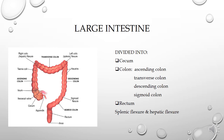I have also mentioned two flexures: splenic flexure and hepatic flexure. The splenic flexure is that bending or curvature between the descending colon and transverse colon. The hepatic flexure is the separation between the transverse colon and ascending colon. So the large intestine is broadly divided into cecum, colon, and rectum, with the colon having four parts: ascending colon, transverse colon, descending colon, and sigmoid colon.